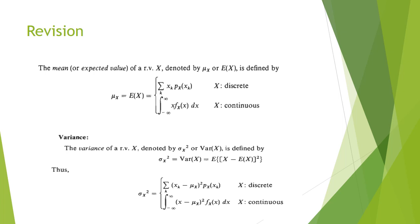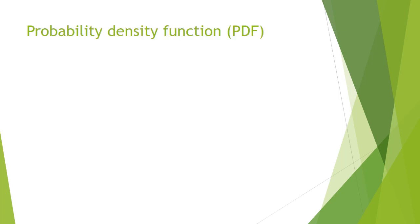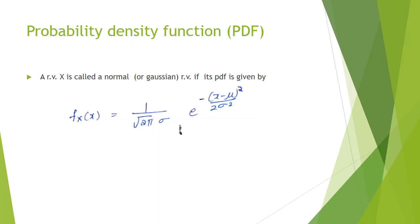We have already discussed distributions such as Bernoulli, exponential, and uniform distribution. Now we discuss normal or Gaussian distribution. The probability density function for normal distribution is: f_X(x) = (1 / sqrt(2π) * sigma) * exp(-(x - mu)² / (2 * sigma²)), where sigma is the standard deviation, sigma² is the variance, and mu is the mean.